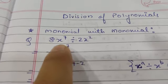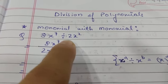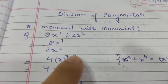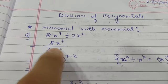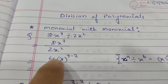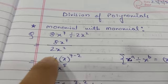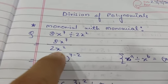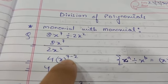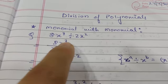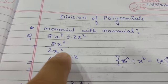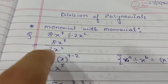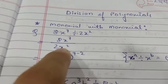We will learn about how to divide monomial term with monomial term. So we have an example 8x to the power 7 divided by 2x to the power 2. We can write it like this because divide can be written in the form of upon. Now 8 divided by 2 means 4, and x to the power 7 upon x to the power 2.